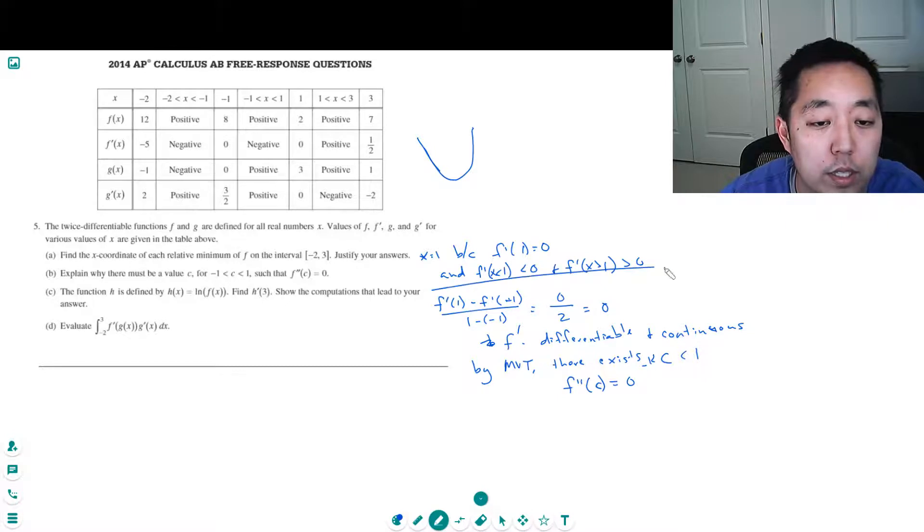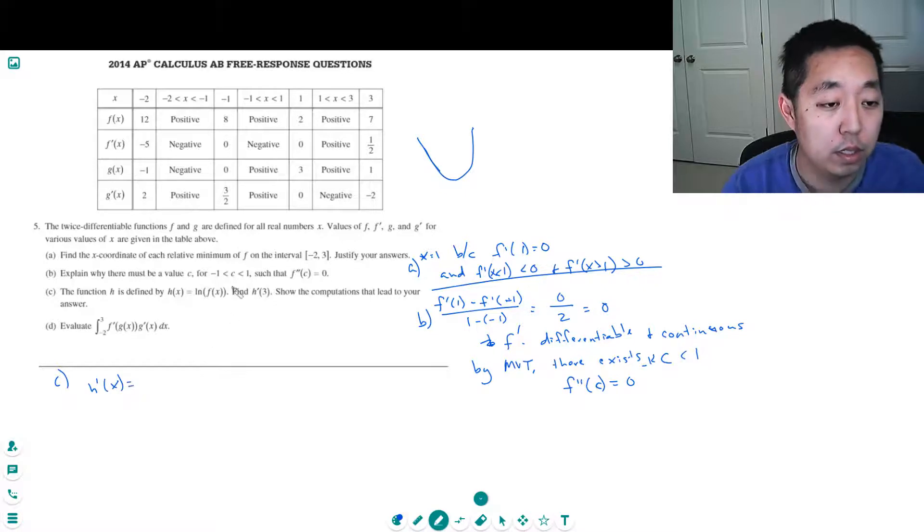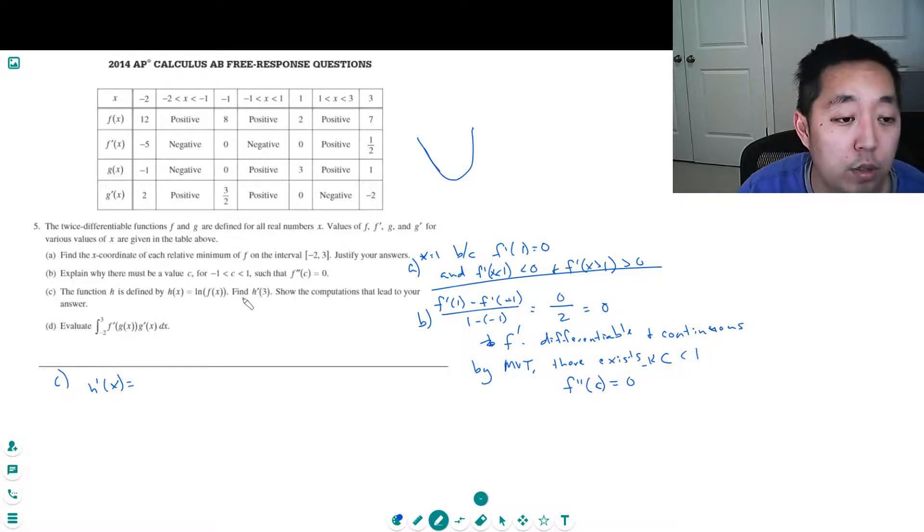Part C: The function h is defined by h of x equals natural log of f of x. Find h prime of 3. So h prime of x, you got to do some chain rule here. Natural log of f of x is 1 over f of x, then the derivative of the inside f prime of x.